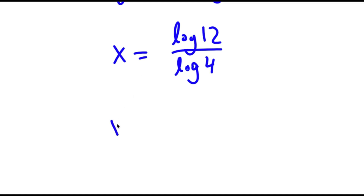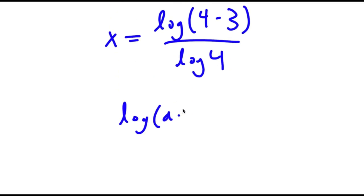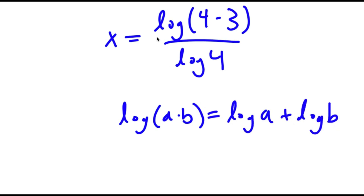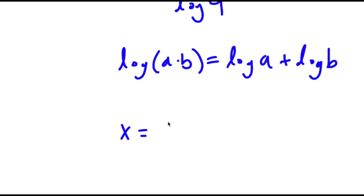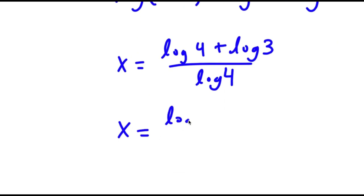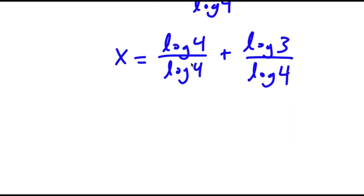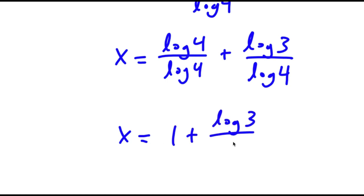Now, log 12 is equal to log of 4 times 3, and I have this over log 4. If I have something in the form log of a times b, this is equal to log a plus log b. So log of 4 times 3 equals log 4 plus log 3 over log 4, which is log 4 over log 4 plus log 3 over log 4. Log 4 over log 4 cancels, so now I have 1 plus log 3 over log 4.